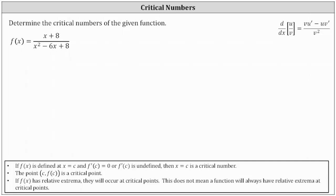We're asked to determine the critical numbers of the given rational function. The first step is to determine the domain of the rational function, because the critical numbers are the x-values of the domain where the first derivative is equal to zero or undefined. The reason we care about critical numbers is that if the function does have relative extrema, that will occur at critical numbers.